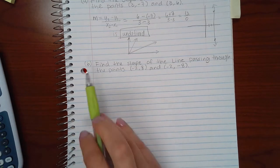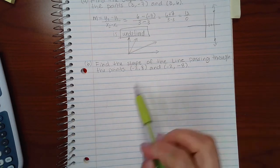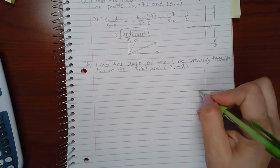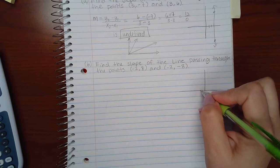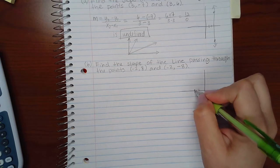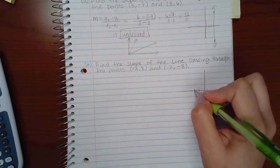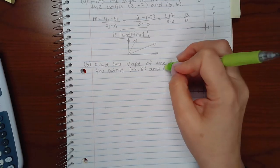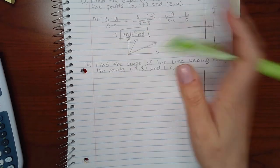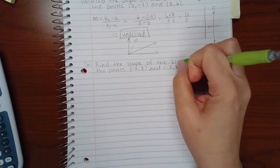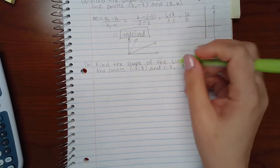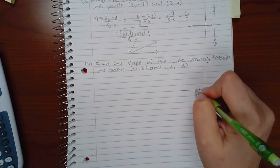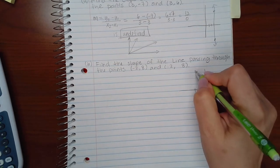Now part b says find the slope passing through these two points. Again if I visualize them here I have negative two and eight. Actually let's change these. There we go, we'll change it to that. So negative two and eight is going to be somewhere up here.